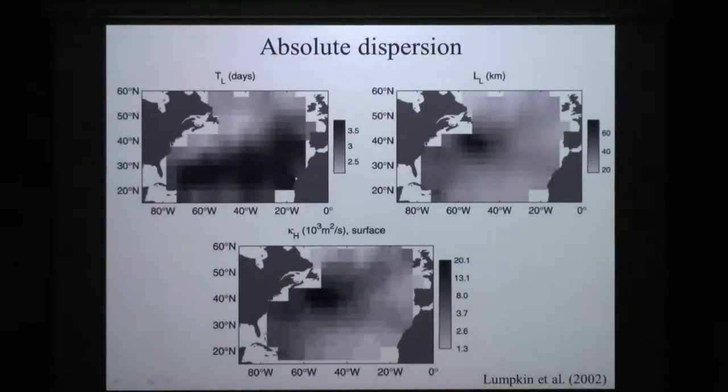This has been used in many drifter studies. This is one I did in 2002 looking at drifters in the North Atlantic, mapping out the timescale in days. You can see it ranges from around two days in the very energetic regions to around four days in the more quiescent part of the subtropical gyre. The length scale tends to get larger in active regions. And the diffusivity, which you see ranges over a little over an order of magnitude here.